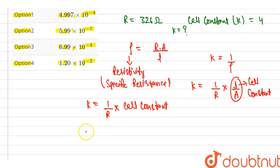Now, put the value of resistance is 326 and cell constant is 4. Now, with solving, we get 0.01227 or we can say 1.2 into 10 to the power minus 2. So the specific conductance or conductivity is equal to 1.2 into 10 to the power minus 2.